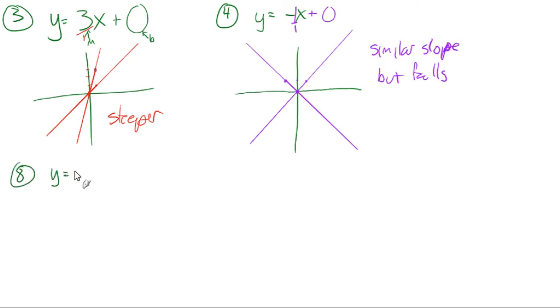y equals negative 3x plus 2. So again, since it's solved for y, this is going to be our slope and this our y-intercept. Slope, y-intercept.